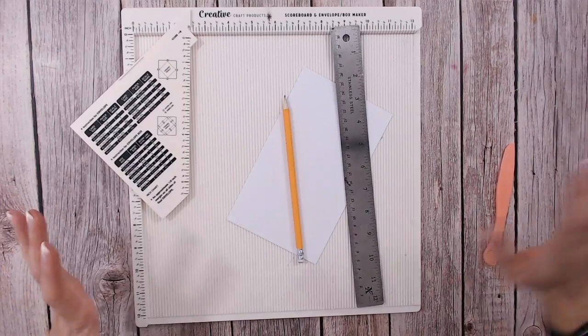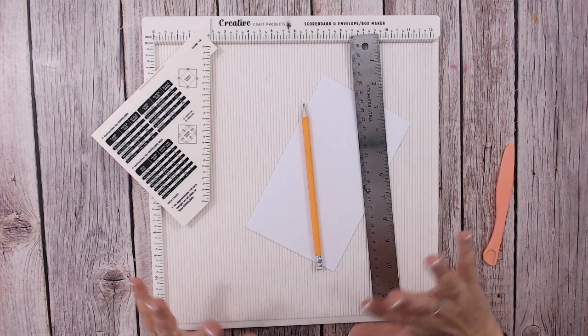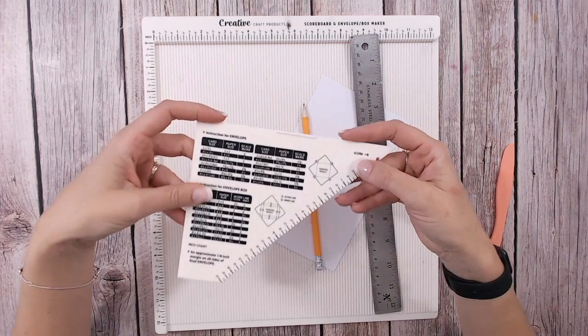So to make this beautiful background you're going to need a scoreboard. I always say the bigger the better. This one is the Creative Craft Products scoreboard so it has increments of an eighth of an inch, which is perfect for a lovely detailed look. But not only is this a scoreboard, it's also an envelope and box maker, and that means it has this kind of diagonal platform or template that fits inside it.